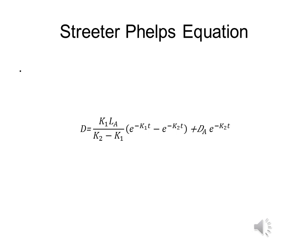D, the oxygen deficit, is equal to K1, the deoxygenation rate, by LA, the oxygen demand, all over K2, the reaeration rate, minus K1, the deoxygenation rate.